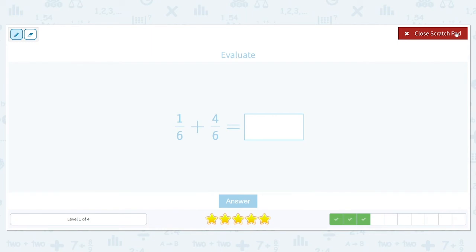One sixth plus four sixths. Our denominators are the same, so we're going to add one plus four to give us five sixths. Five and six do not have any factors in common, so that is our final answer.